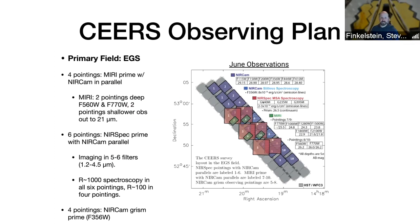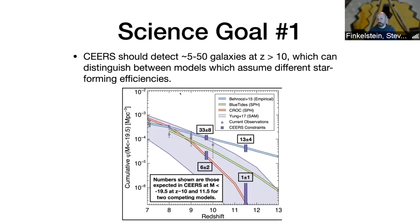Science goal number one is the Redshift 10 and beyond universe. Depending on which model is right, we predict that CEERS should detect between 5 and 50 galaxies at Redshift greater than 10. The science justification is that we would be able to distinguish between models which assume different star-forming efficiencies. I'm showing a version of a luminosity function at different redshifts — the cumulative number of brighter-than −19.5 absolute magnitude galaxies. If the blue model is right, there'll be 50-plus galaxies we'll find; if the red model is right, maybe fewer. At the brighter end of the luminosity function where CEERS is sensitive, star formation efficiency is the parameter we think we'd actually be able to pin down quite a bit.